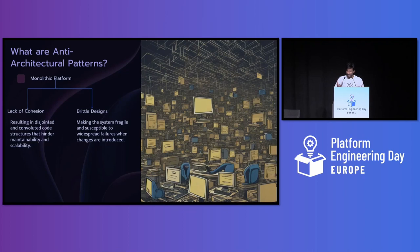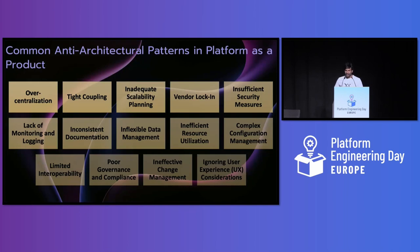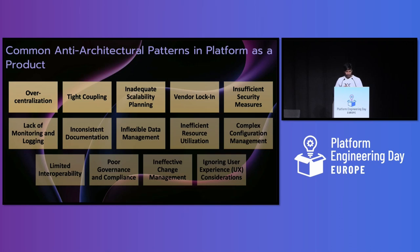What are anti-architectural patterns? For example, a monolithic architecture. If you're implementing a platform, you don't want to bring in a monolithic architecture — that will lead to a lack of cohesion, and it's a brittle design more susceptible to widespread failures when changes are introduced into the system. Another example is over-centralization: concentrating too much control or functionality within a single component can lead to a single point of failure. Tight coupling — when you want too much control — can lead to anti-architectural patterns.